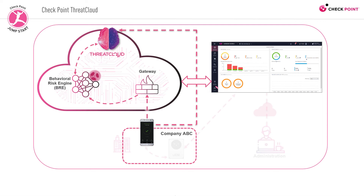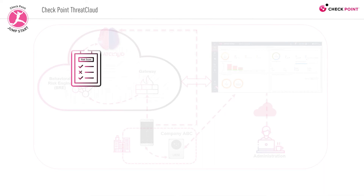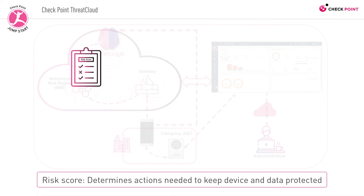Based on the engine's analysis, it can detect suspicious activity and produces a risk score according to the threat indicators and severity. The risk score determines what automatic mitigation actions are needed to keep a device and its data protected.